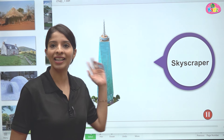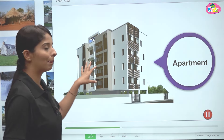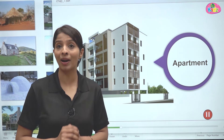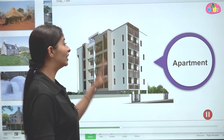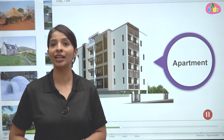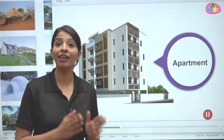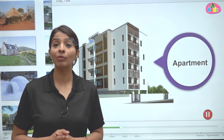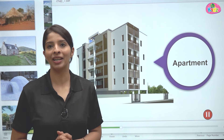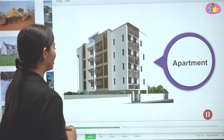Next we have apartments. You must have seen apartments around you. These are multi-story buildings where a part of an area — a particular floor of the building — is called an apartment. So these are the apartments.